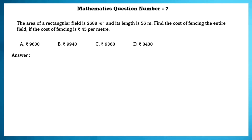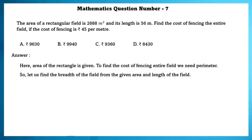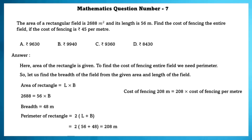Mathematics question number 7. The area of a rectangular field is 2,688 square metres and its length is 56 metres. Find the cost of fencing the entire field if cost of fencing is 45 rupees per metre. Using area equals length into breadth, breadth equals 48 metres. Perimeter equals 2 into L plus B, that is 208 metres. Cost of fencing is 208 into 45 equals 9,360 rupees.